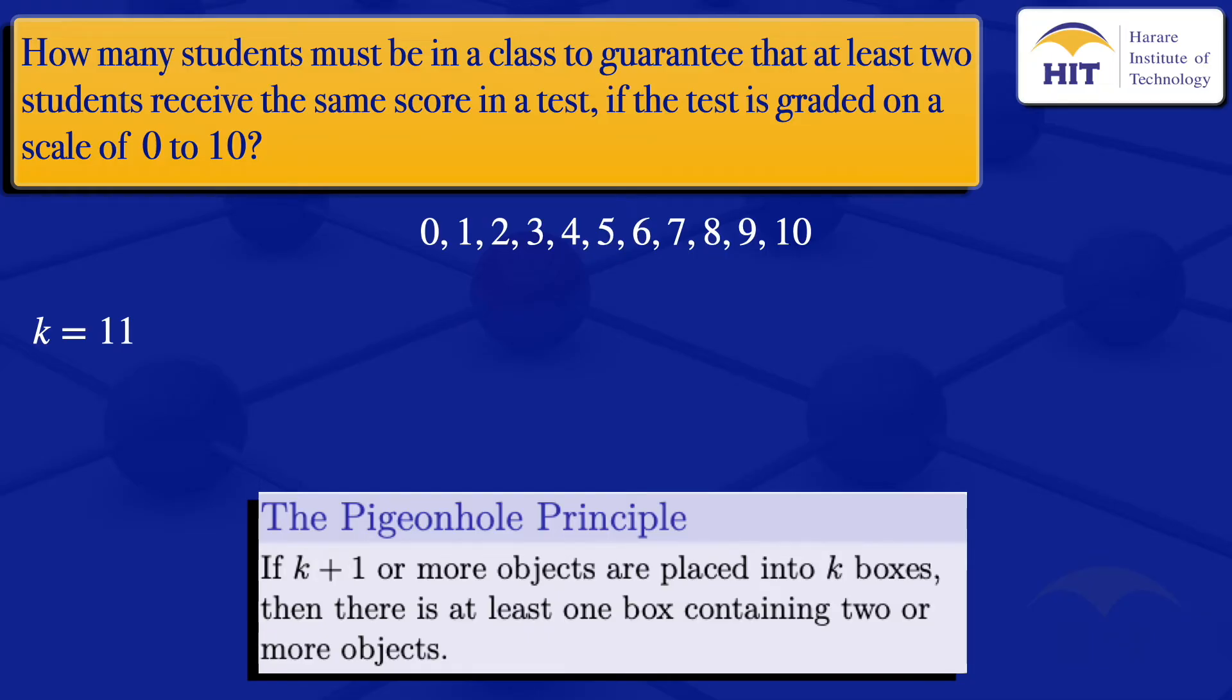In this case, what we are calling our boxes are the grades. We want at least 2 students to get the same score. So taking the scores to be our boxes, the number that is needed is k plus 1.